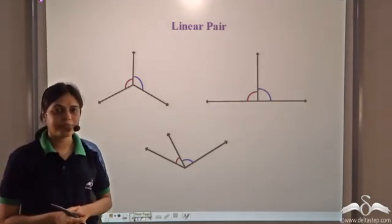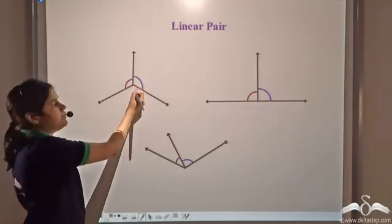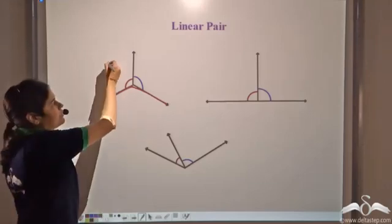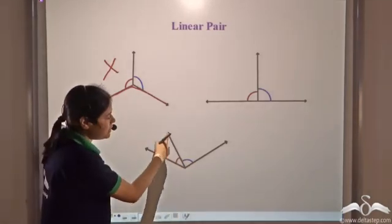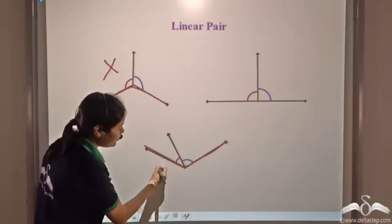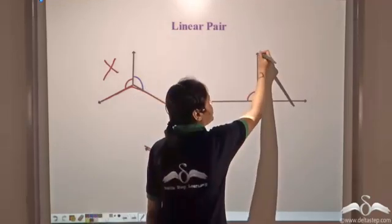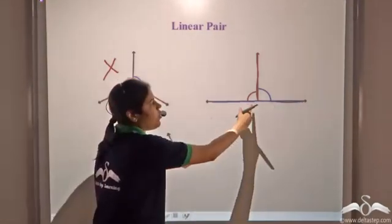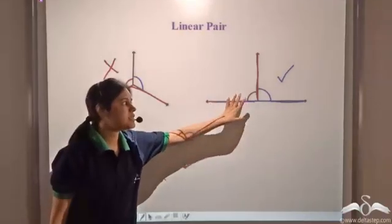Which of these three diagrams forms a linear pair? In the first, the non-common arms do not lie on a straight line, so it is not a linear pair. In the second, the non-common arms are also not on a straight line, so that is not a linear pair either. In the third, the non-common arms lie on a straight line — so this is a linear pair of angles. Only this third case is a linear pair.